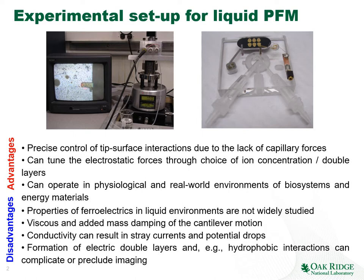More importantly, PFM typically requires application of high biases to the tip — if we switch a ferroelectric material we apply volts DC, and for AC measurements we very often use volts AC, sometimes tens of volts AC. Obviously, applying a 10-volt bias to a metallic electrode in liquid will produce electrochemical reactions. The conductivity of the solvent can result in stray currents and potential drops. We can also have complex phenomena such as electric double layer and hydrophobic interactions that affect our imaging.